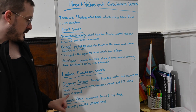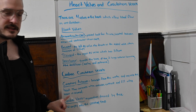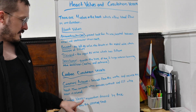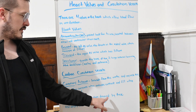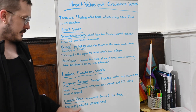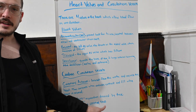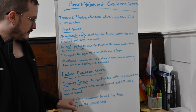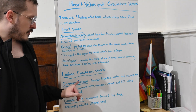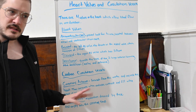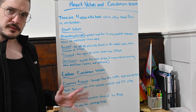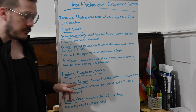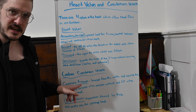The cardiac veins drain the myocardium and empty into the coronary sinus, located on the back of the heart. Coronary arteries are usually involved in myocardial infarctions — there is usually a clot that forms in the coronary arteries which causes the MI.